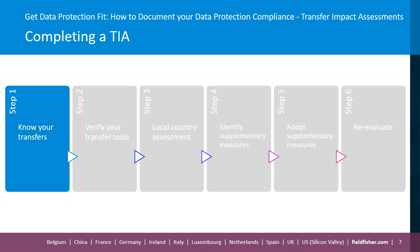Looking at step one, it's all about knowing your transfers and documenting these in your TIA accordingly. You need to know where your transfers are going, and this can be done by mapping all transfers of personal data outside of the EEA. Much of this step may already have been completed before starting your TIA, after undertaking data mapping for your ROPA. It's important to note that a transfer under the GDPR does not have the literal meaning of only data moving from the EEA to a country outside the EEA — a transfer also refers to access. So access from a third country, for example China, to data in an EEA country also constitutes a transfer.